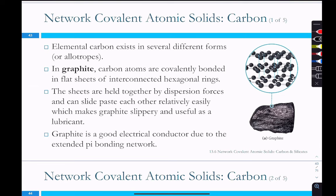Network covalent atomic solids — the first example is carbon. Carbon can have many different forms called allotropes. Graphite, which is pencil lead, consists of carbon atoms covalently bonded into flat sheets of interconnected hexagonal rings. If you put a piece of tape on a block of graphite and pull it up, it removes a single layer of graphene. The individual layers are held together only by dispersion forces, which is why you can write with a pencil and rub those layers off onto paper.